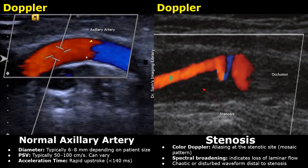This image shows a normal axillary artery with color Doppler applied. We can see smooth blood flow within the artery.